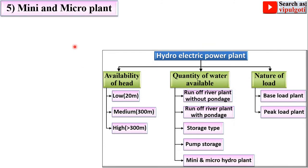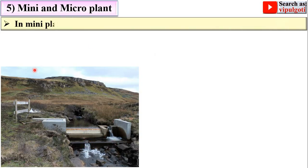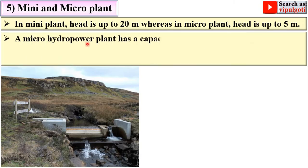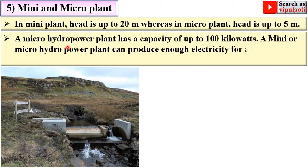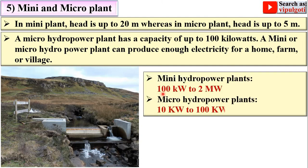Mini and micro hydropower plants are small-scale plants. In a mini plant, the head is up to 20 meters, whereas in a micro plant, the head is up to 5 meters. A micro hydro power plant has a capacity of up to 100 kW and can produce enough electricity for a home, farm, or village. Mini hydro power plants have a capacity of 100 kW to 2 MW, whereas micro hydro power plants range from 10 kW to 100 kW.